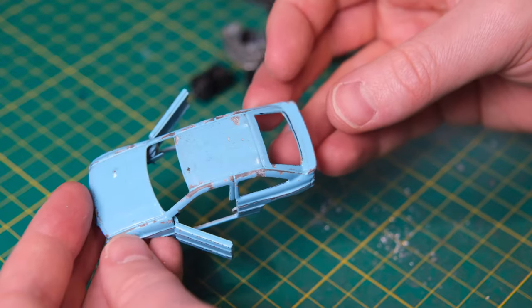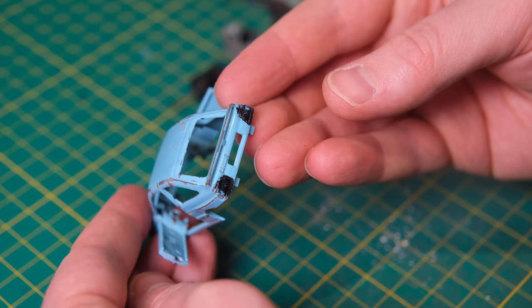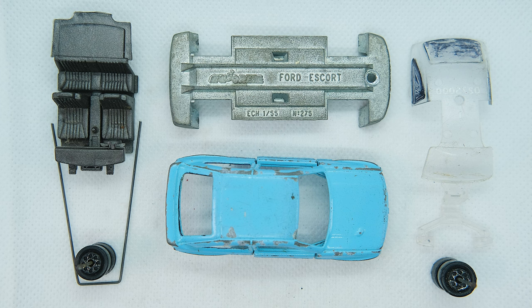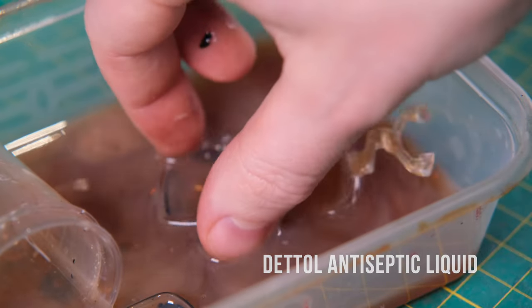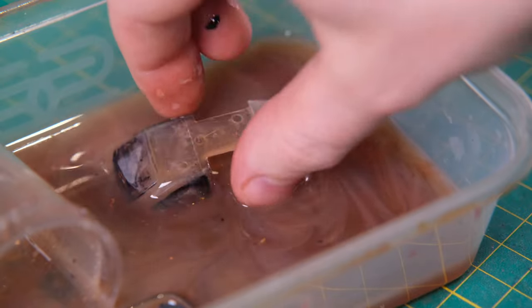Max Power wasn't just a magazine though, it was a lifestyle. It captured the essence of the boy racer scene where young enthusiasts pushed the boundaries of automotive customisation. From neon lights to booming sound systems, Max Power builds were all about making a statement on the streets.